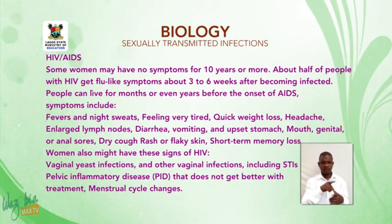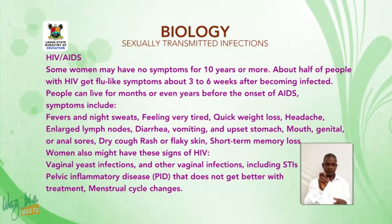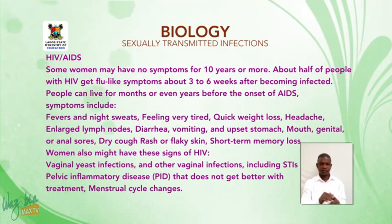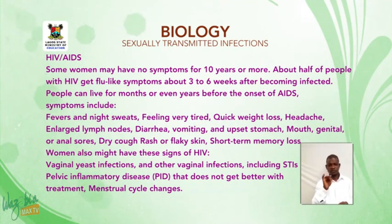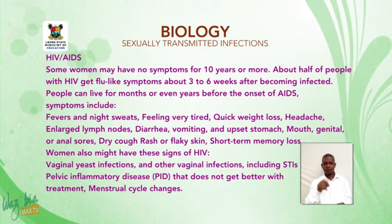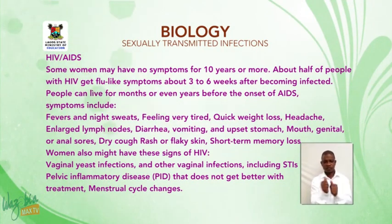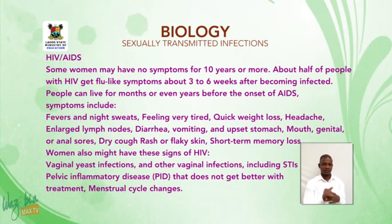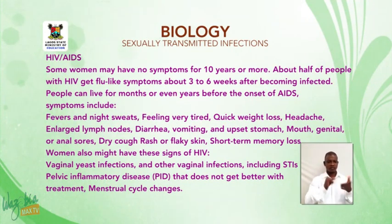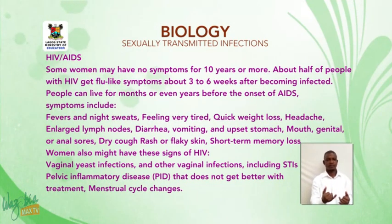Women may also have these additional signs of HIV: vaginal yeast infections and other vaginal infections including STIs, pelvic inflammatory disease (PID) that does not get better with treatment, and menstrual cycle changes.